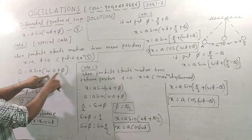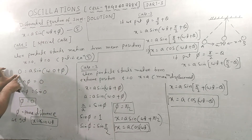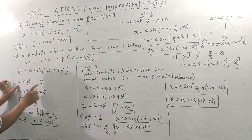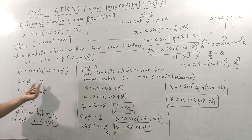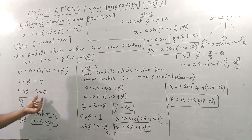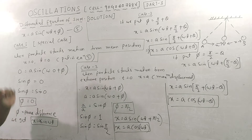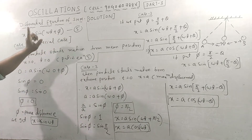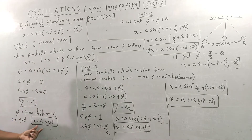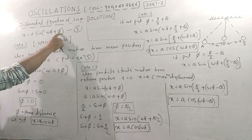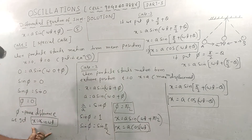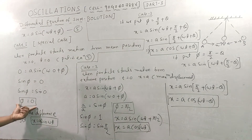Substituting: 0 = A sin(ω·0 + φ), so 0 = A sin φ, which gives sin φ = 0, therefore φ = 0. So the solution for the first special case — particle starting from mean position — is x = A sin(ωt). So for mean position, x = A sin(ωt), and the phase constant φ equals zero.